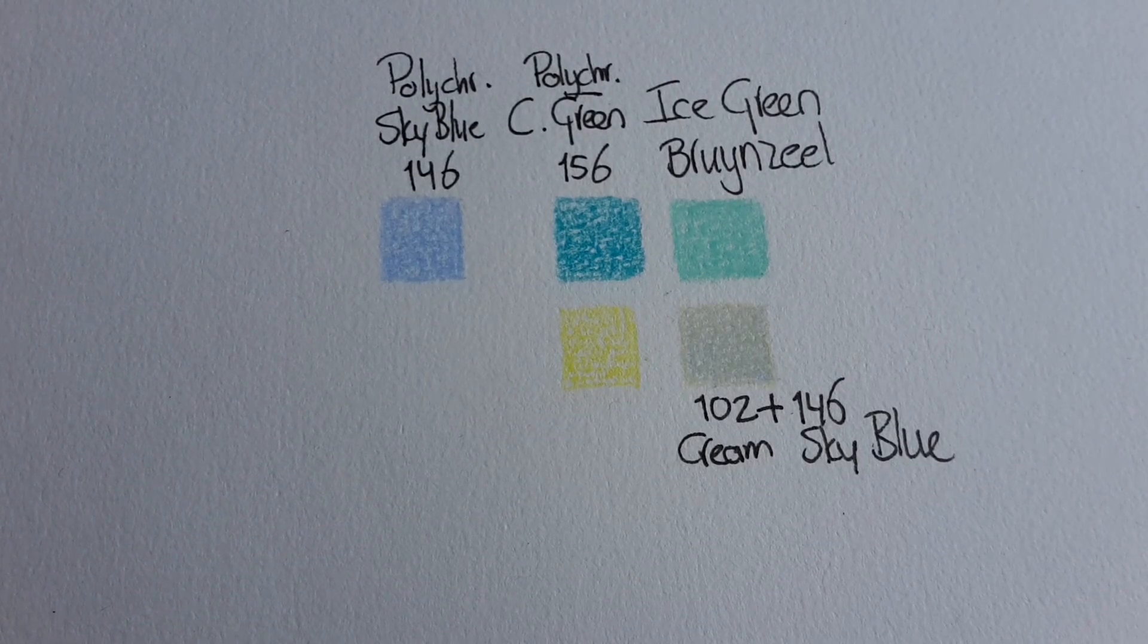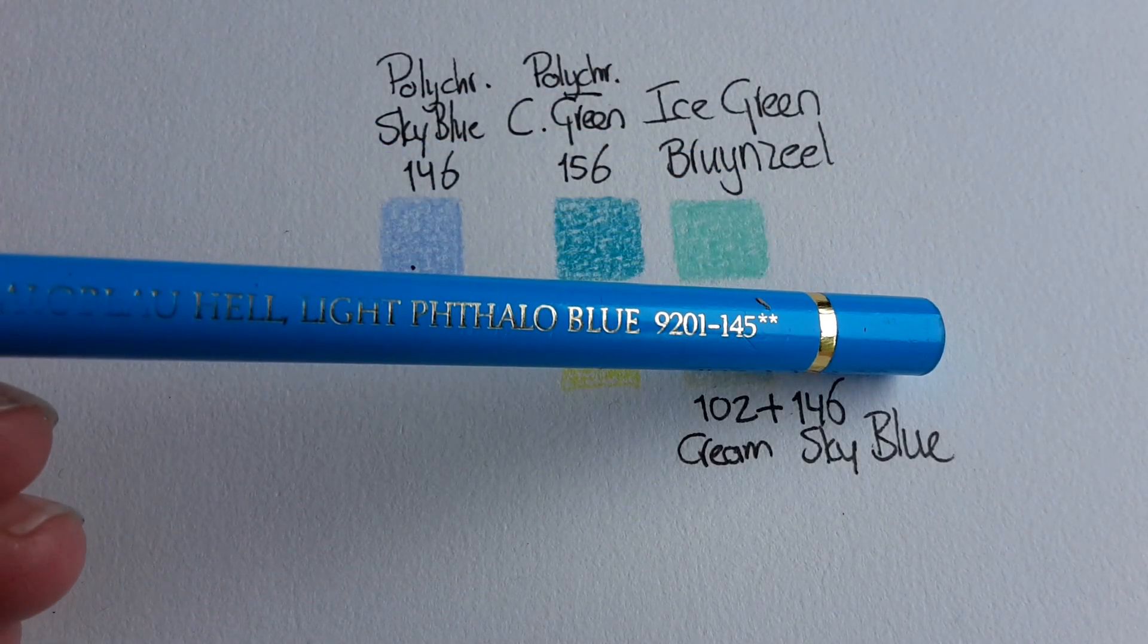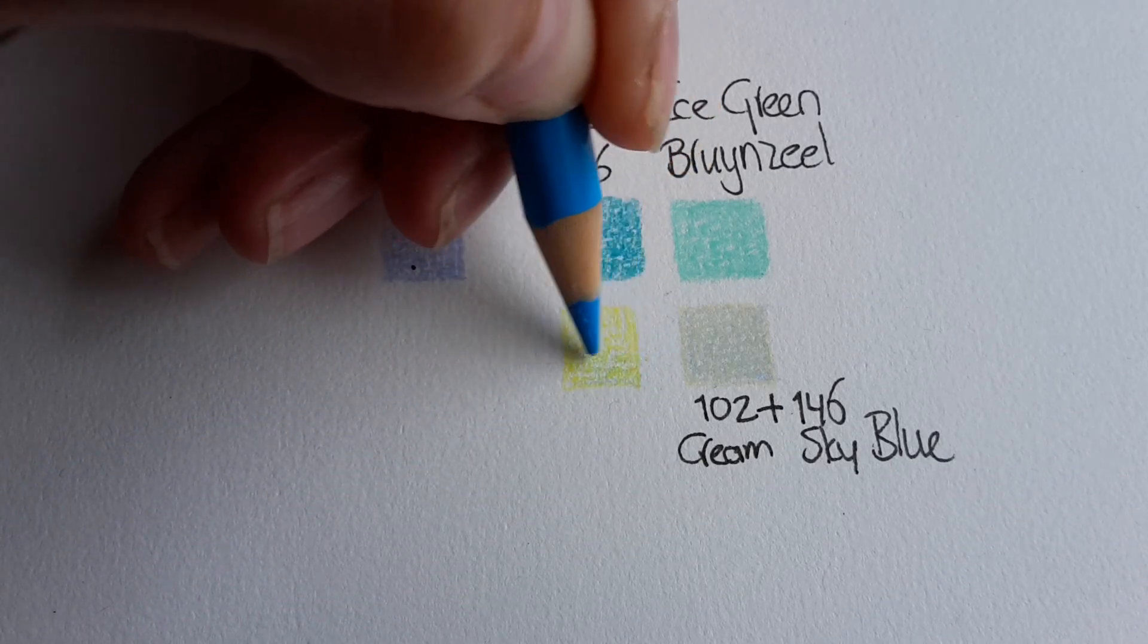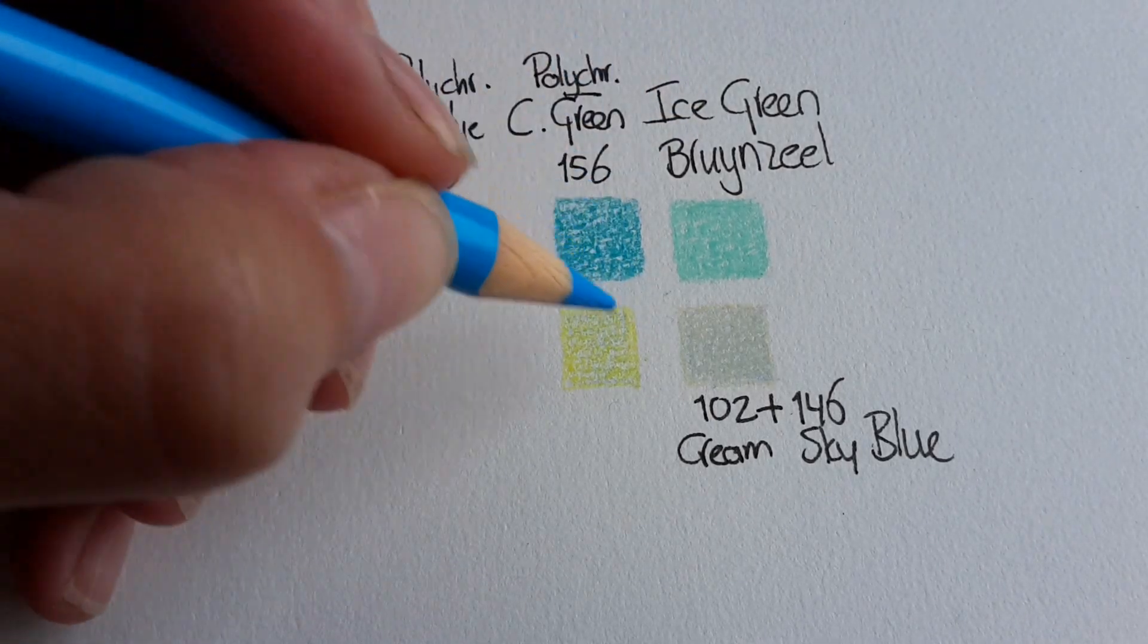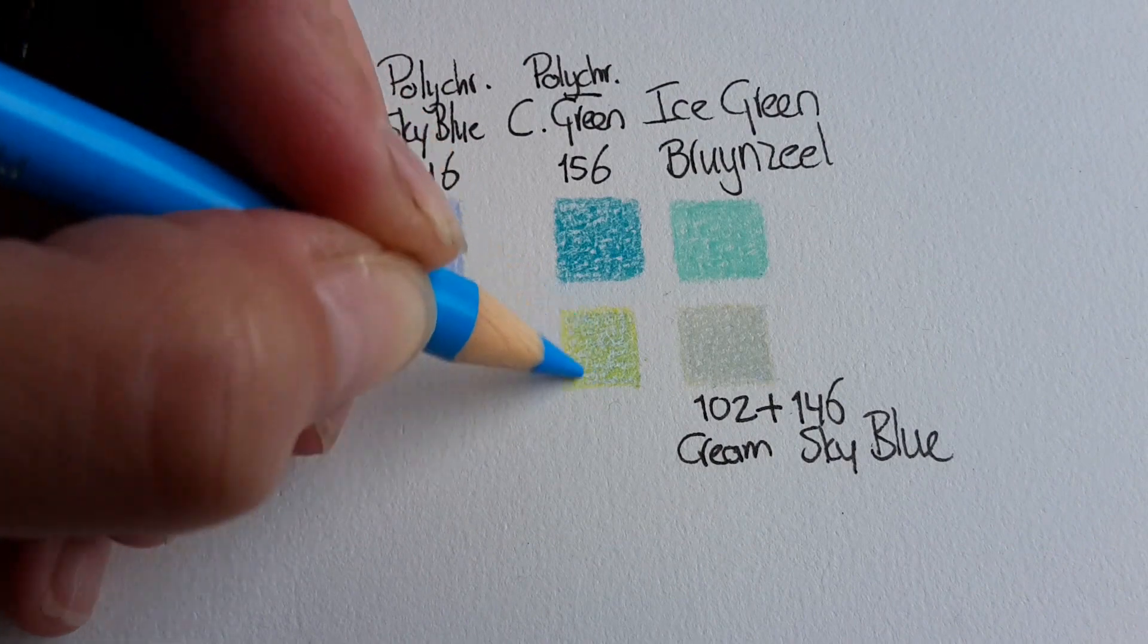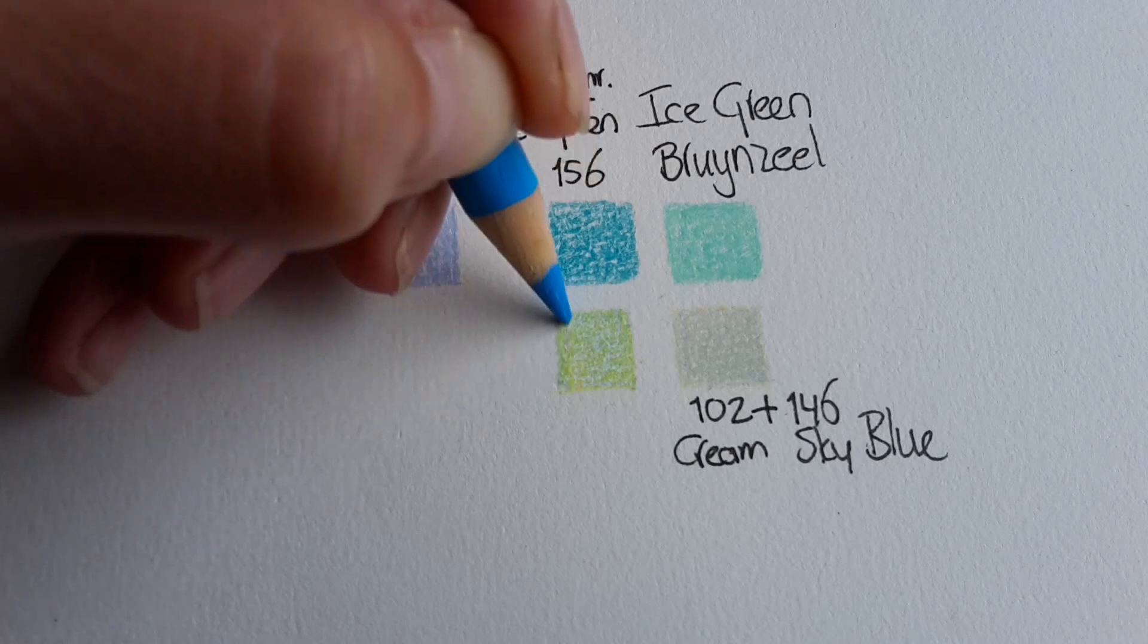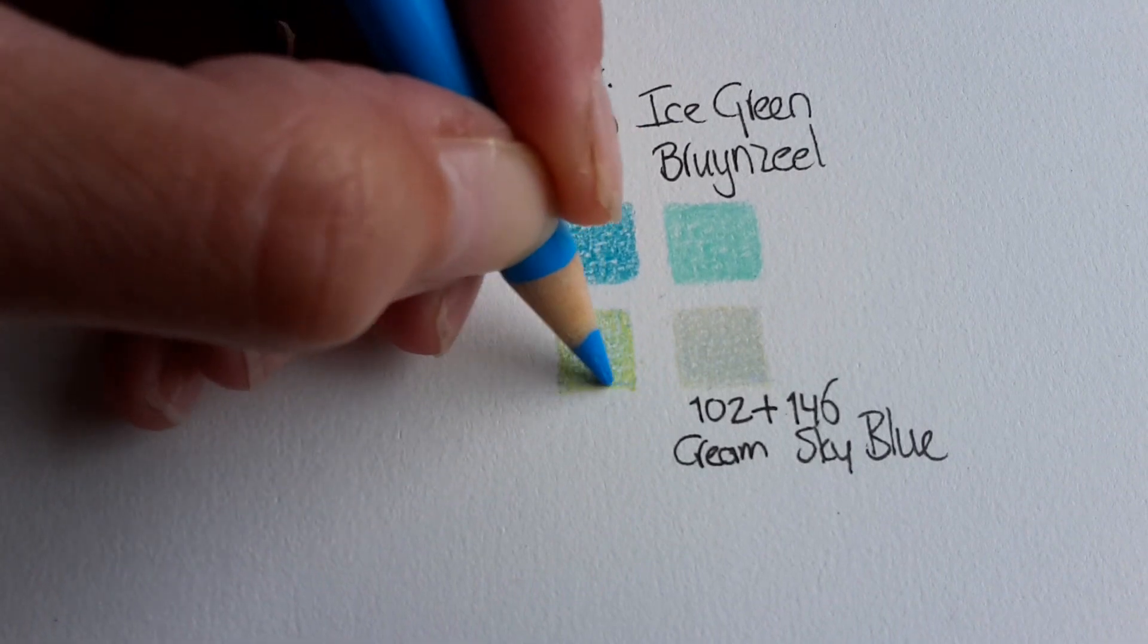And let's try this one, light talo blue 145. I'm using a very light touch. Because although this is a pretty light blue, it is not as light as the sky blue. And I find this talo blue of a darker tone than the ice green I'm looking for.